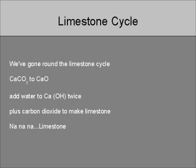We've gone round the limestone cycle: CaCO3 to CaO. Add water to CaO and H2O, plus carbon dioxide, to make some limestone. Limestone, limestone, limestone, limestone.